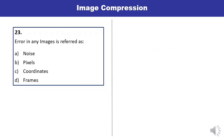Question 23: Error in any image is referred as — noise, pixels, coordinates, or frames? Error in any kind of image is known as noise. A is the correct answer.